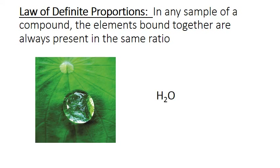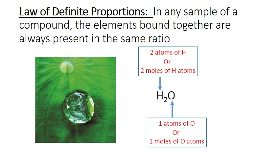For any particular formula, the subscripts represent the number of atoms of each element within that formula. It turns out that we can just scale that up to also relate number of moles. For example, for water, in one molecule of water, we have two atoms of hydrogen and one atom of oxygen bound together, as indicated by the subscripts in the formula. We can also say that in one mole of water molecules, we have two moles of hydrogen atoms and one mole of oxygen atoms. These numbers are derived ultimately from empirical measurements of the masses of the individual elements within that compound. So in this PowerPoint, we're going to cover how these subscript numbers can actually be derived and how we can get empirical formulas and ultimately molecular formulas.